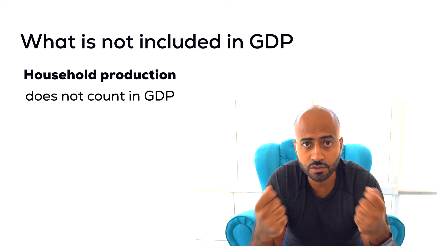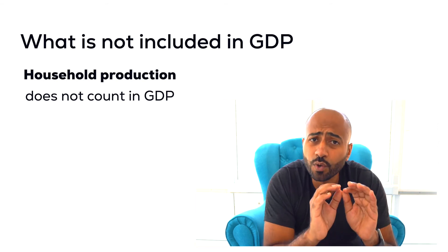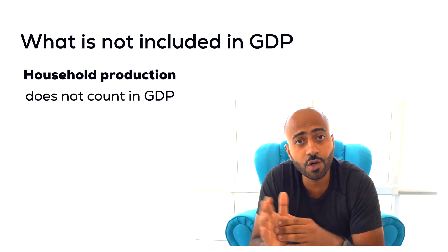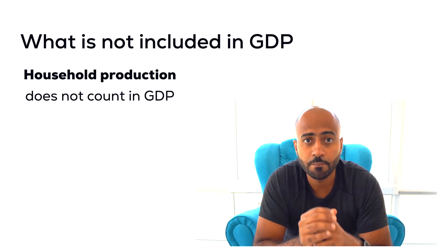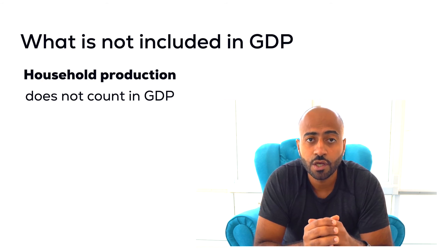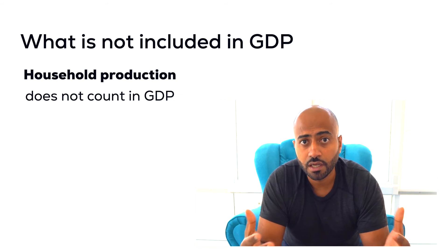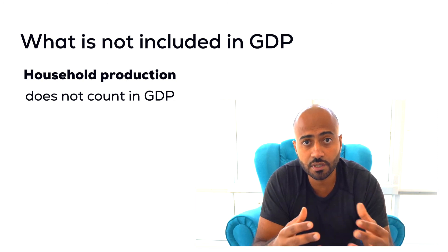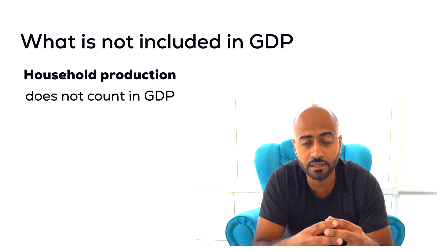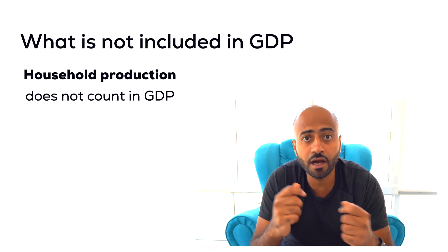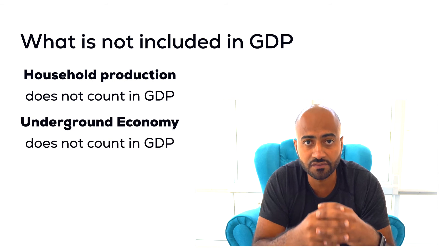Think about your breakfast this morning. If you ate at home, the groceries you bought counted as a market transaction, but the actual service of preparing the breakfast did not go into GDP. However, if you went to a diner, that service is included in GDP because there's a market transaction. When comparing across countries, we have to consider cultural differences — some cultures produce more at the household level, which may cause GDP to understate the true economic activity.